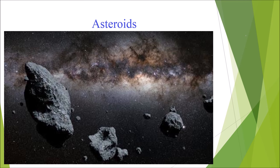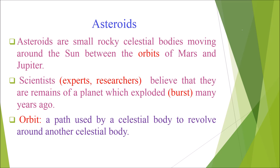Next, we are going to learn about asteroids. Asteroids are small rocky celestial bodies moving around the sun between the orbits of Mars and Jupiter. An orbit is a path used by a celestial body to revolve around another celestial body. Scientists believe that asteroids are remnants of a planet which exploded — that is, burst apart — many years ago.